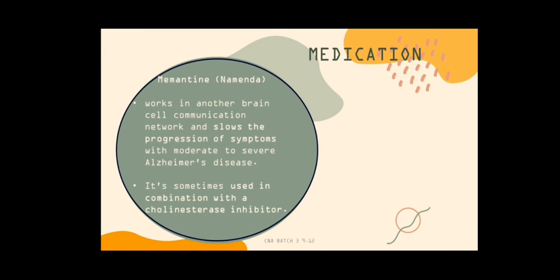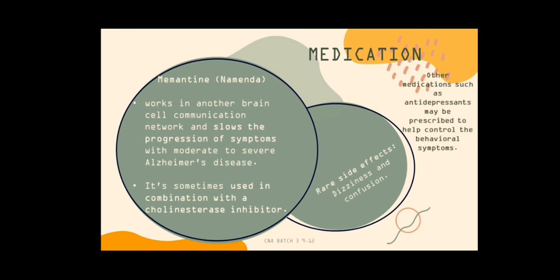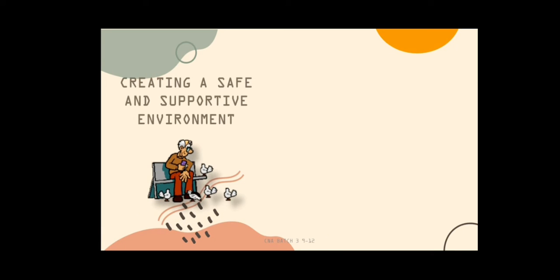Memantine works in another brain cell communication network and slows the progression of symptoms with moderate to severe Alzheimer's disease. It is sometimes used in combination with a cholinesterase inhibitor. Rare side effects include dizziness and confusion. Other medications such as antidepressants may be prescribed to help control the behavioral symptoms.